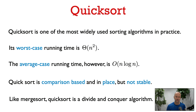A big advantage that QuickSort has over merge sort — and merge sort has worst-case running time O(n log n) — is that QuickSort is in-place, so it uses only a constant amount of extra memory beyond the input vector. Like merge sort, QuickSort is a comparison-based algorithm, but it is not a stable sorting algorithm as typically implemented.